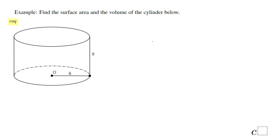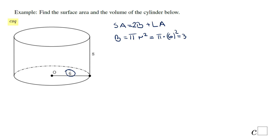Let's see an example: find the surface area and the volume of the cylinder below. I'm going to use the alternate form: two bases plus the lateral area. The base is a circle: pi r squared. The radius is 6, so it's pi times 6 squared, which equals 36 pi. We have two of them: 2 times 36 pi.